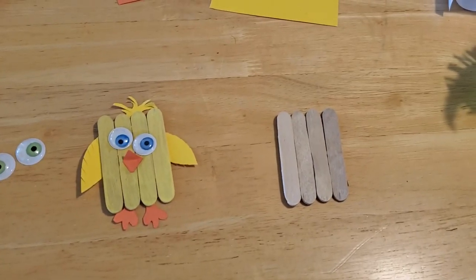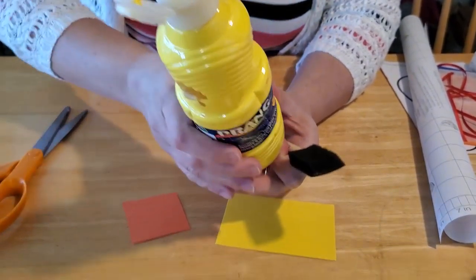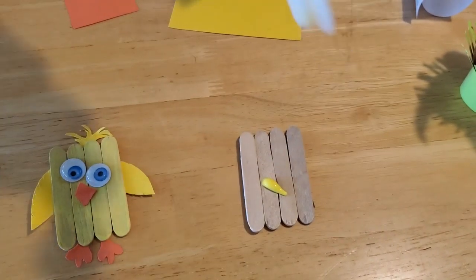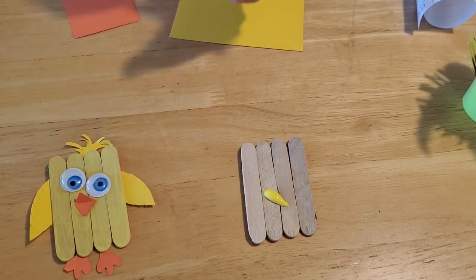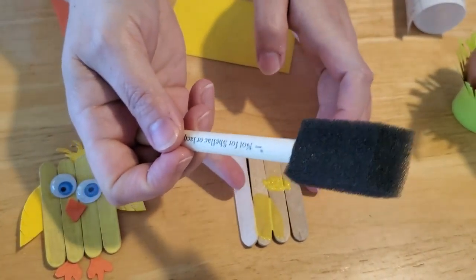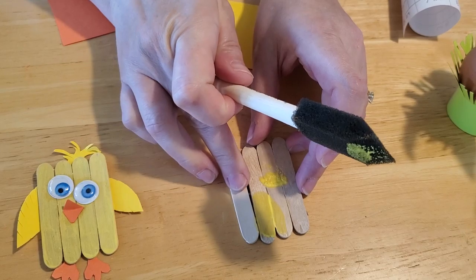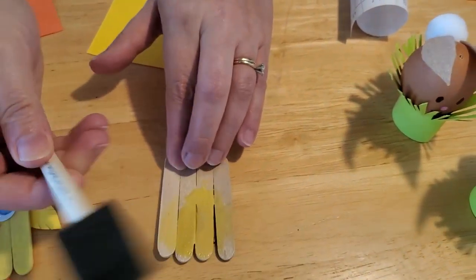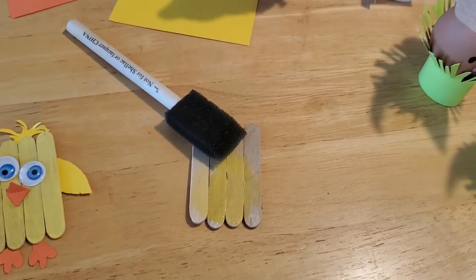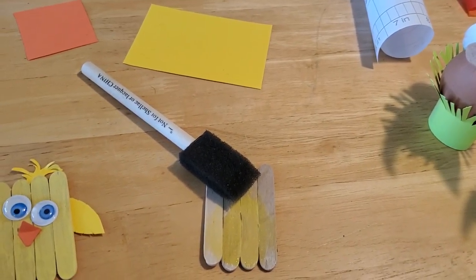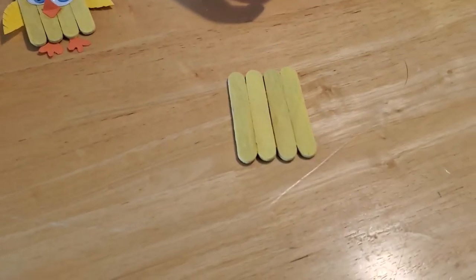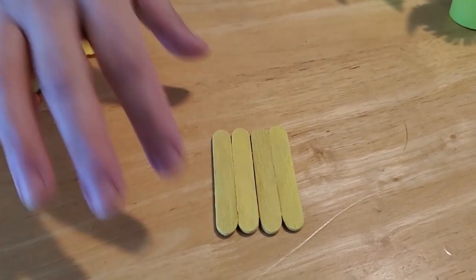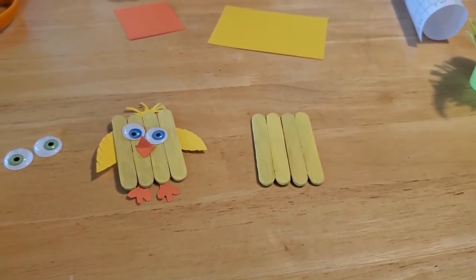When it's dry, you want to take your paint, and you just want to put a little bit on here. You don't need a lot. And you just want to paint all of the popsicle sticks. Now, as you can see, since I didn't let it dry, it kind of fell apart, which is why you need to let it dry. But then just paint all your popsicle sticks. And you want to make sure you get all the way around and on the edges. And when it is dry, it's going to look like this. This is going to be the body of your chicken.